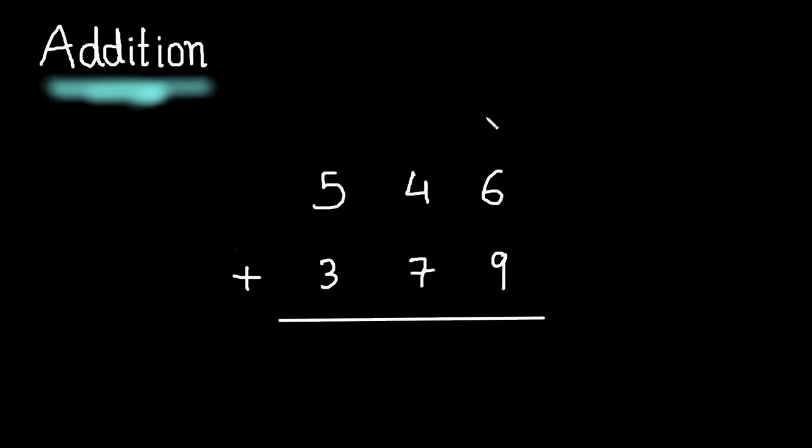As we know, this is 1s place, this is 10s place and this is 100s place. We have 6 and 9 at 1s place. So, let us add them together, 6 plus 9. By adding 6 and 9, we get 15.